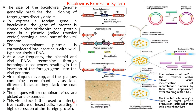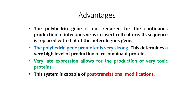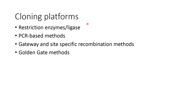The virus stock is then used to infect a fresh culture of insect cells, resulting in high expression of foreign protein. Advantages: the polyhedrin gene is not required for continuous production of infectious virus in the insect cell line; its sequence is replaced with the heterologous gene. The polyhedrin gene promoter is very strong, determining very high levels of production of recombinant protein. Very late expression allows production of very toxic proteins, and this system is capable of post-translational modification.